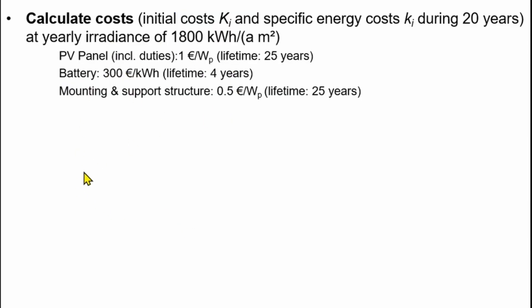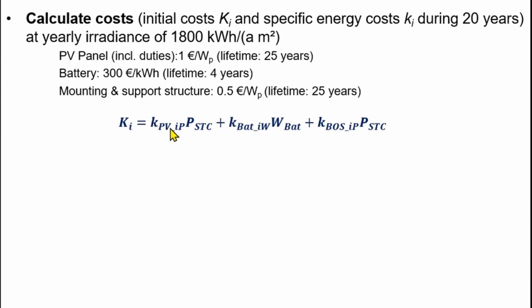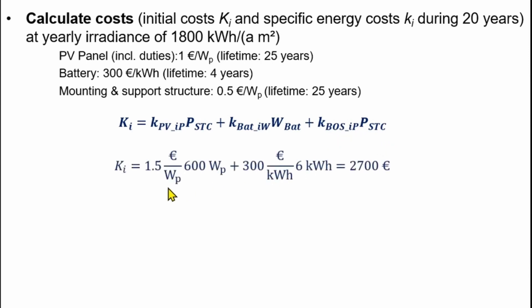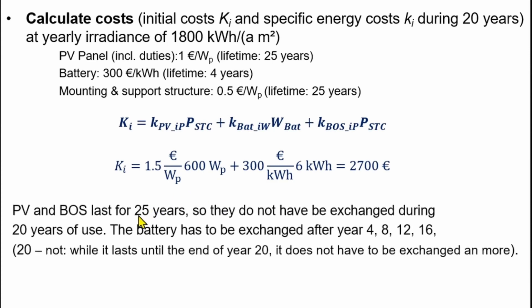Using the given values for the location: PV panels cost 1 euro per watt (expensive due to duties and local market prices, but realistic), plus 0.5 euro per watt for the support structure, totaling 1.5 euro per watt times 600 W = 900 euros. Battery cost is 300 euro per kilowatt-hour times 6 kWh = 1,800 euros initially. The initial total investment is 2,700 euros. During 20 years, the PV and balance-of-system costs need no replacement, but the battery must be exchanged after years 4, 8, 12, and 16.